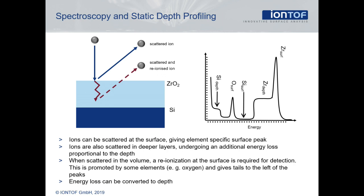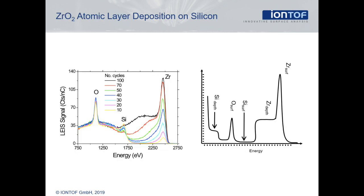In this slide, we see experimental data from zirconium oxide films grown by ALD on silicon dioxide. The number of ALD deposition cycles corresponds to the amount of material deposited. With the increasing number of cycles, the surface peak of zirconium — representative for zirconium oxide — increases, while the silicon peak is decreasing. This means the surface area covered by zirconium oxide is growing.